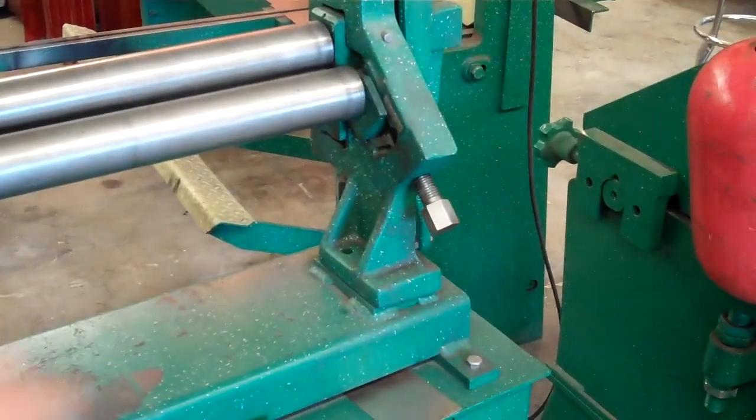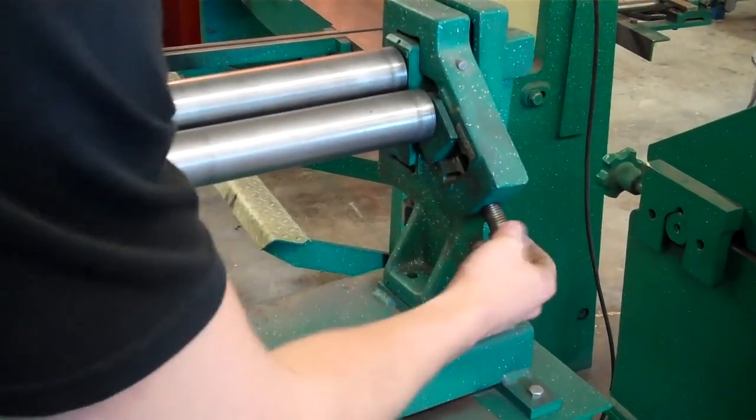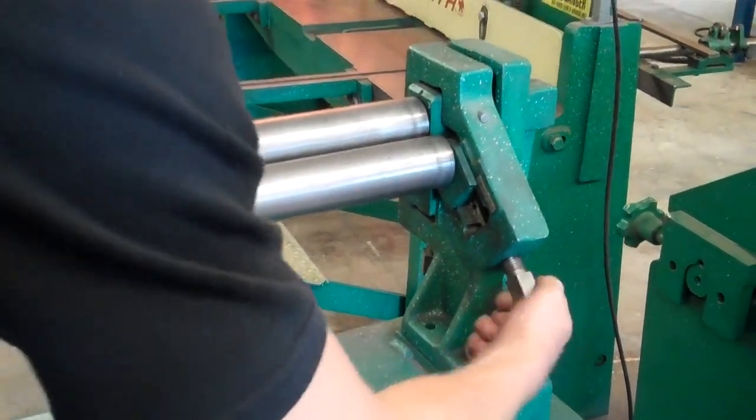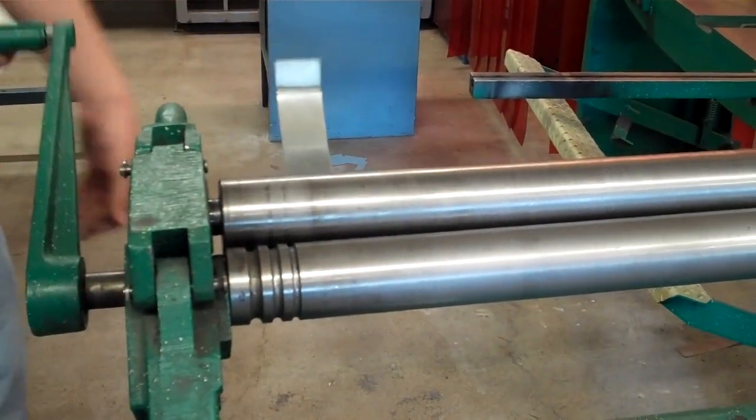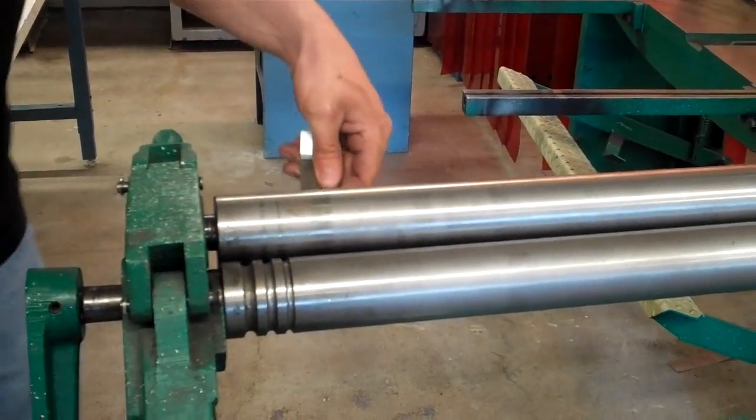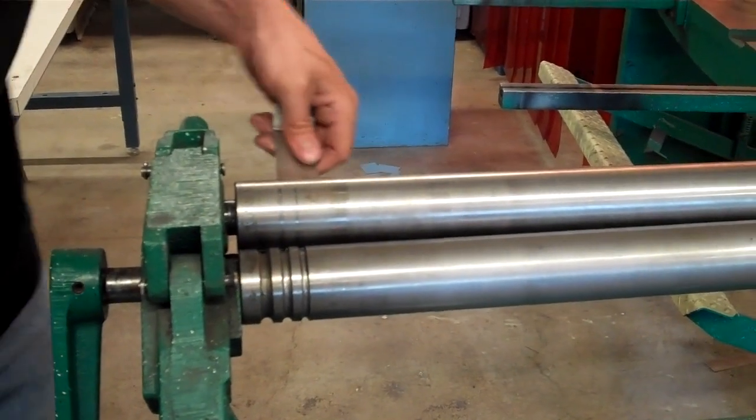The radius you can get with this is not extremely tight. Obviously, it can't go tighter than the diameter of the top roller. And it's mostly useful for larger thickness stock. And I've actually over-tightened this so it's not feeding through.